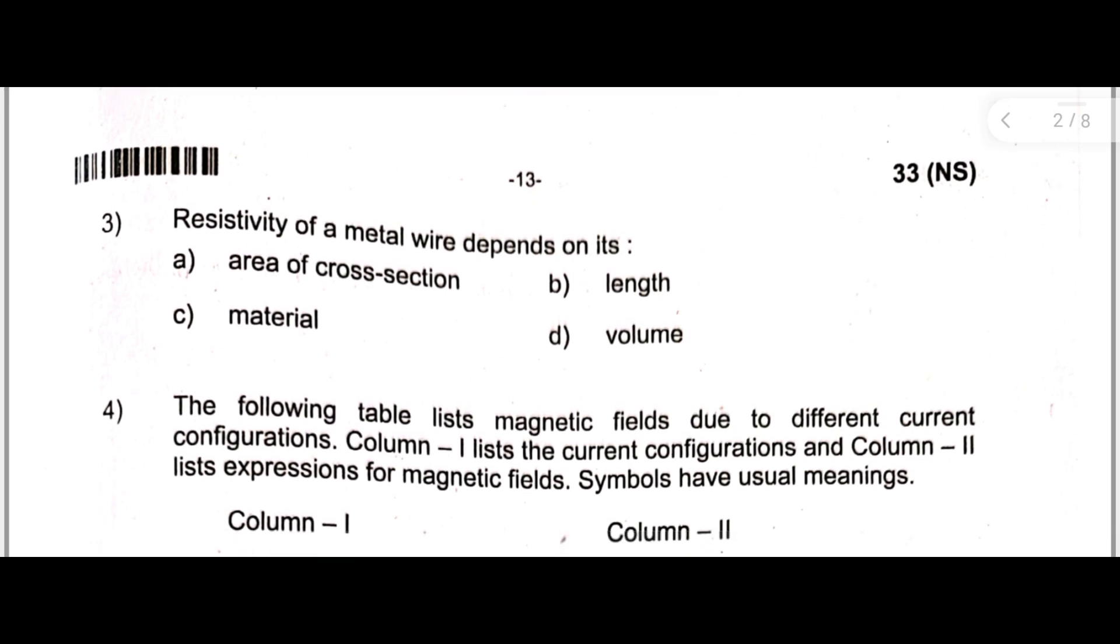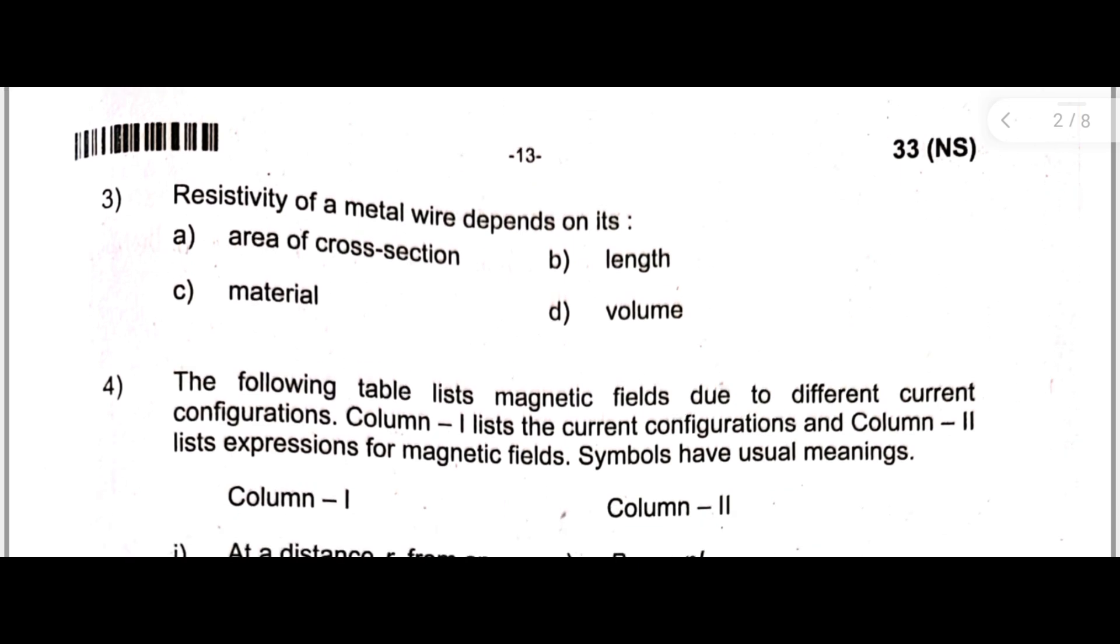Next, the third question is: Resistivity of a material of wire depends on its - option A: area of cross section, B: length, option C: material, option D: volume. Here the correct answer is option C: material.